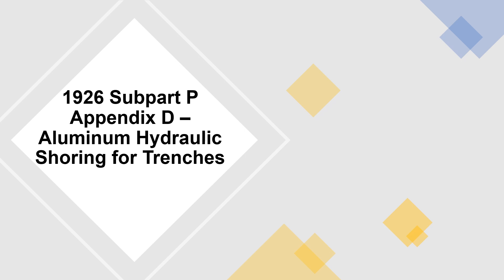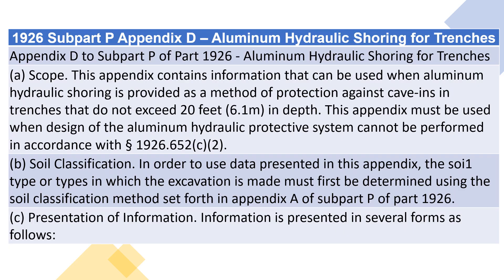1926 Subpart P Appendix D — Aluminum Hydraulic Shoring for Trenches. This appendix contains information that can be used when aluminum hydraulic shoring is provided as a method of protection against cave-ins in trenches that do not exceed 20 feet (6.1 meters) in depth. This appendix must be used when design of the aluminum hydraulic protective system cannot be performed in accordance with Section 1926.652 C.2.